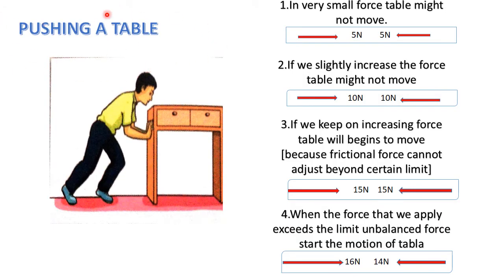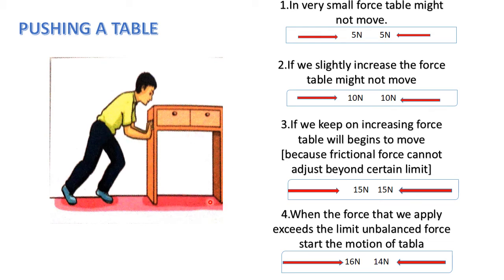I can explain these three types of friction using this example. Consider a table that needs to move along a horizontal floor. First, when we exert a very small force — say phi Newtons — the floor exerts an equal and opposite force of phi Newtons, so the table does not move. The magnitudes of the two forces are equal and cancel out. This friction is called static friction.